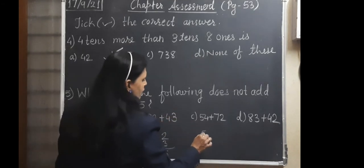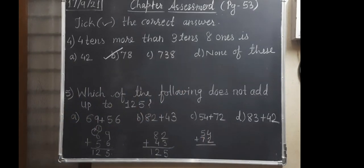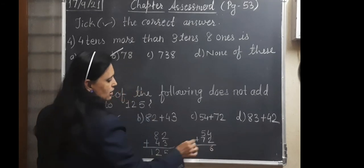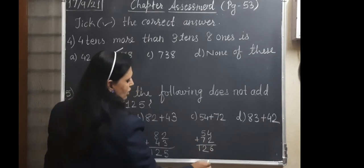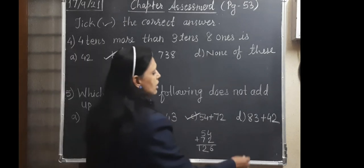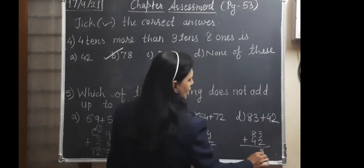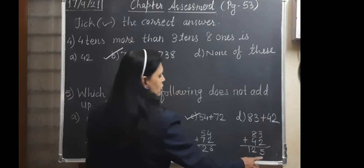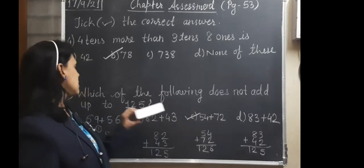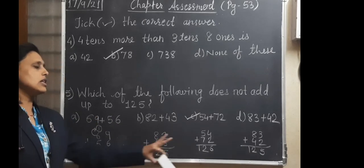Next we will see 54 plus 72. So we will add here. 4 and 2, there comes 6. Single digit number. 5 and 7, 12. So this is not 125. So this will come your answer. Next also we will check it: 83 plus 42. Then 3 and 2, 5. 8 and 4, 12. So 125 answer is coming. So from this C is your correct answer, which does not add up to 125. It adds up to 126.